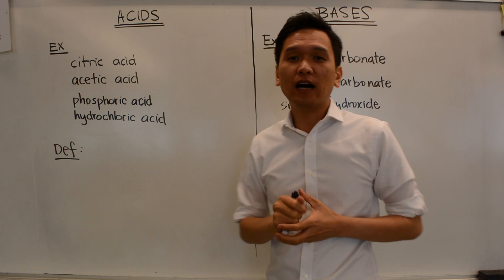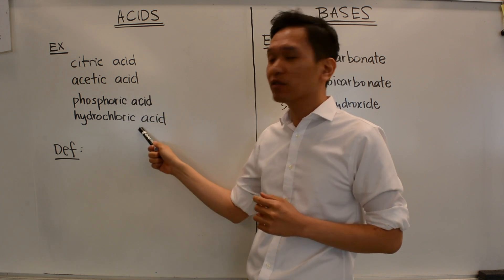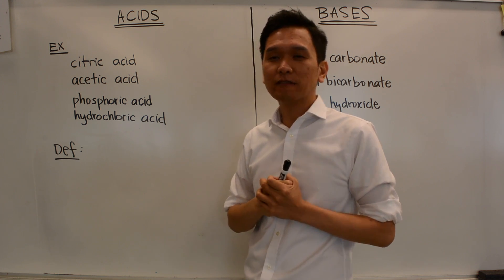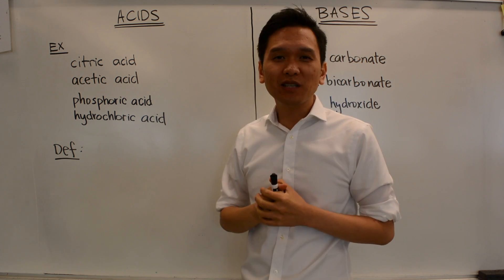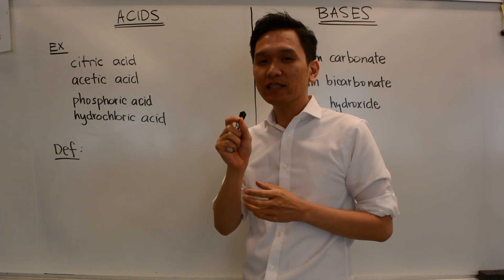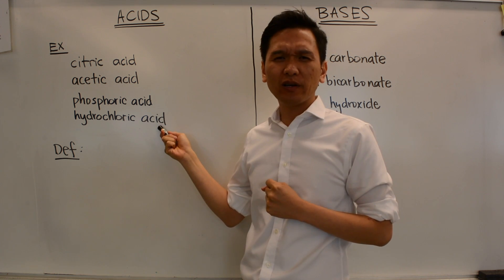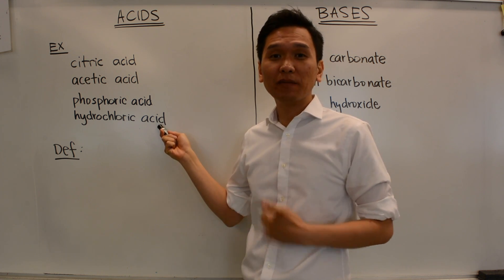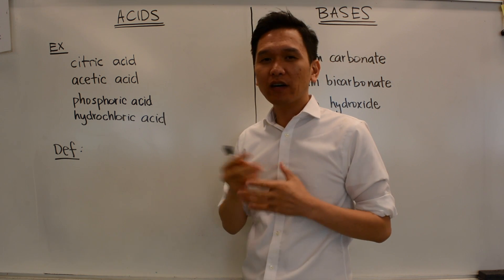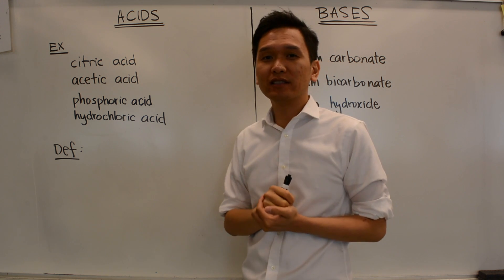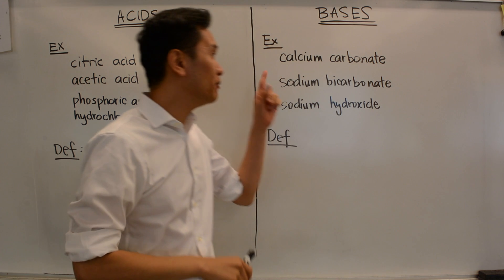Let's talk about some acids first. Some of the common acids are citric acid, acetic acid, phosphoric acid, and hydrochloric acid. Citric acid is found in fruits like oranges or lemons. Acetic acid is the acid in vinegar. Phosphoric acid is in sodas. Hydrochloric acid is in your stomach — that's stomach acid. A common everyday attribute of acids is that they tend to have a sour taste.